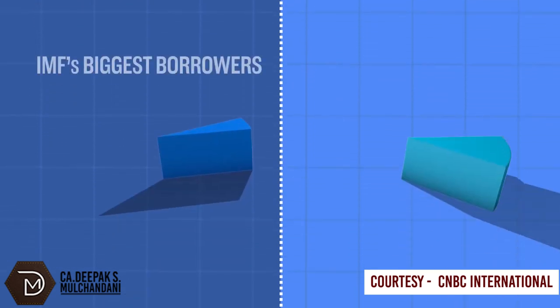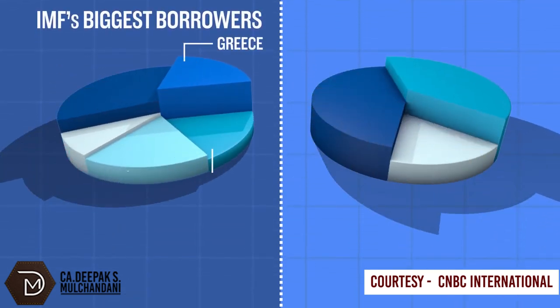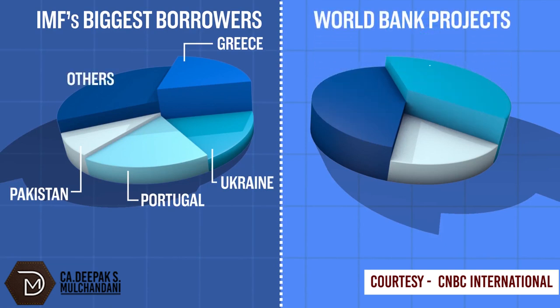Today, the IMF's biggest borrowers include Greece, Ukraine, Portugal, and Pakistan. The places where the World Bank is running the most projects are in Africa and East Asia.